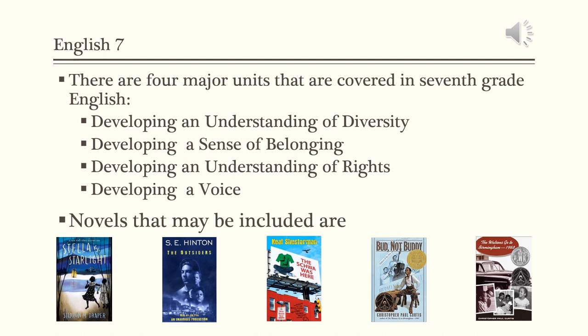There are four major units covered in 7th grade English: Developing an Understanding of Diversity, Developing a Sense of Belonging, Developing an Understanding of Rights, and Developing a Voice. Novels that may be included are Stella by Starlight, The Outsiders, The Schwa Was Here, Bud Not Buddy, and The Watsons Go to Birmingham 1963.